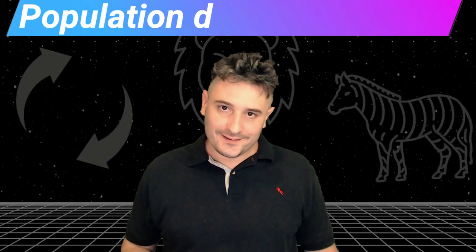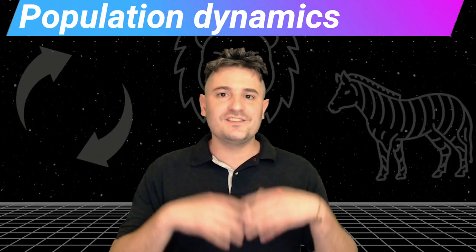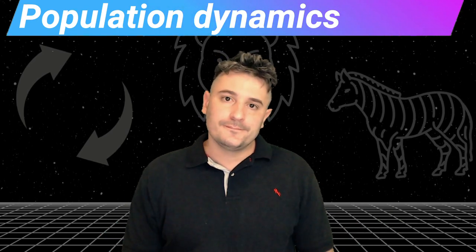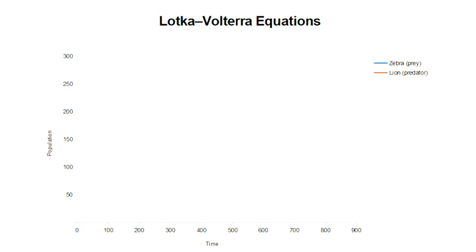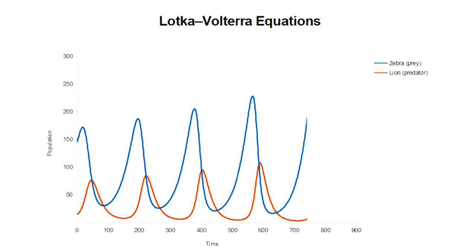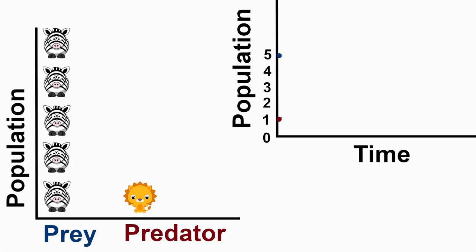Population dynamics — how do populations change over time? For a predator-prey cycle example, let's use zebras as prey and lions as predators. To start, imagine in the savannah there is a high population of zebras and very few lions. How will the populations change?